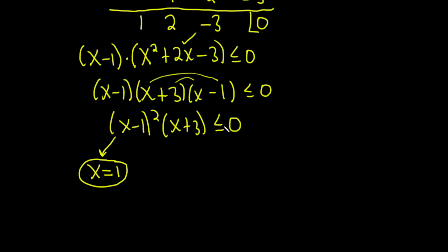So this is always... So if x is not 1, then this is always positive. So the only thing that's going to make this expression negative is this. So when is x + 3 going to be less than or equal to 0? Well, when x is less than or equal to -3.